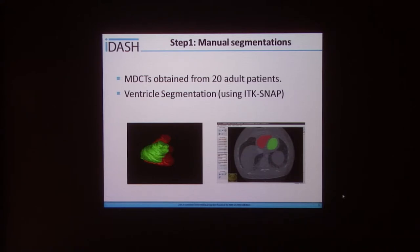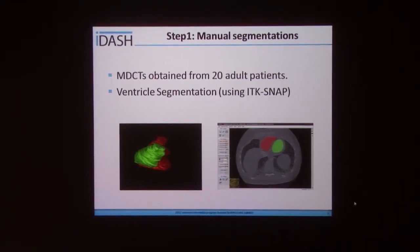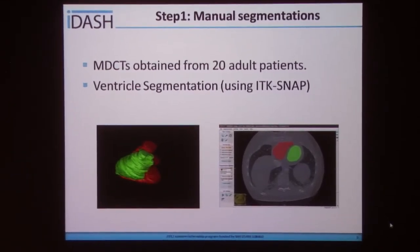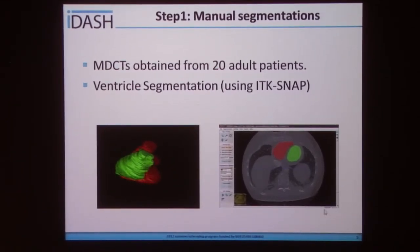To build the model, step one was to obtain manual segmentations from MDCTs. Our dataset comprised 20 MDCTs from adult patients, all segmented for ventricles using the segmentation tool ITK-SNAP. The figure on the left shows the result of the segmentation of the ventricles in 3D, while the figure on the right shows how the segmentation was performed on the axial axis of each image.